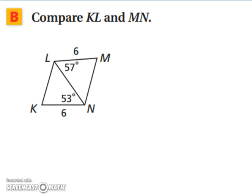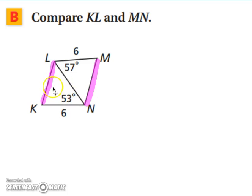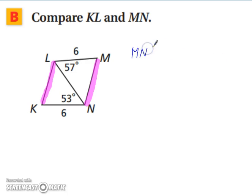Let's try another example: compare KL and MN. Which one is larger? We have LM the same length as KN, and they share side LN, so that's the same length. Now looking at the third side, angle MLN has the larger angle, so therefore MN is larger than KL.